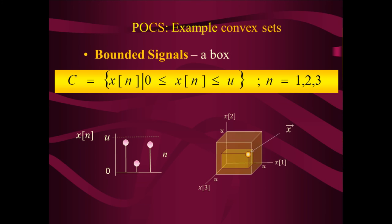If we look at all elements bounded between 0 and 1, we get a box. We take the values x1, x2, and x3 and treat them as x, y, z components. All elements within this convex set must lie within the box. The smaller box included defines the coordinate x — the bounded signal — and it is indeed within the convex set. So the set of signals x(n) that are bounded forms a convex set, as we might expect.